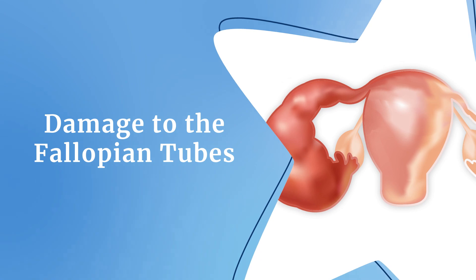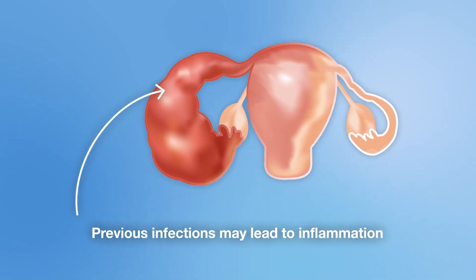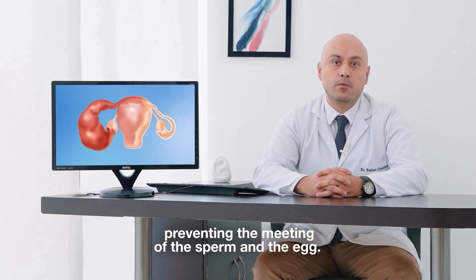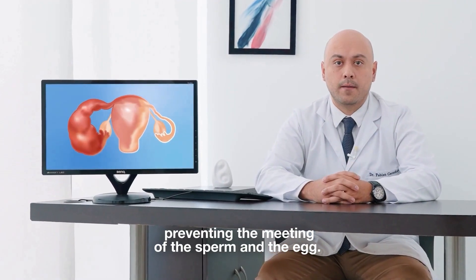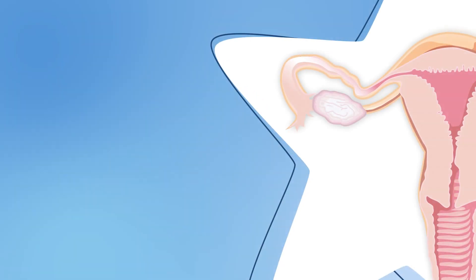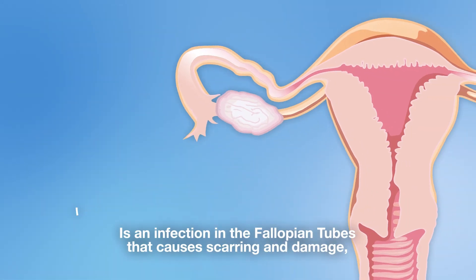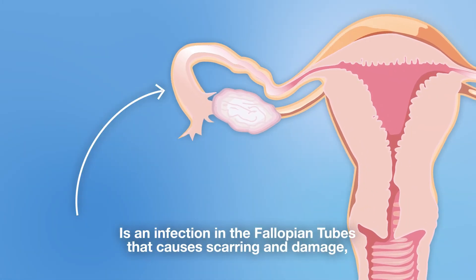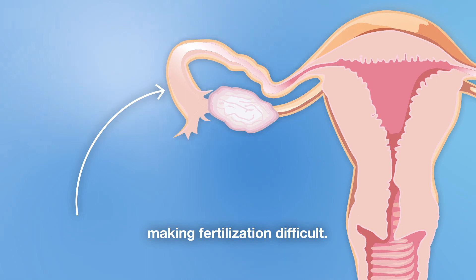Damage to the fallopian tubes: previous infections may lead to inflammation, which can damage the fallopian tubes, preventing the meeting of the sperm and the egg. Salpingitis is an infection in the fallopian tubes that causes scarring and damage, making fertilization difficult.